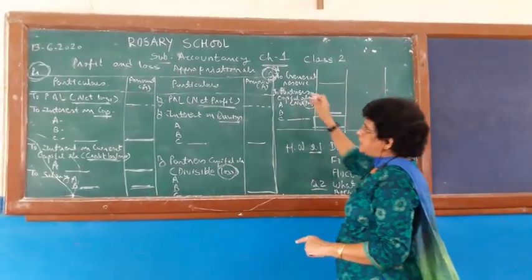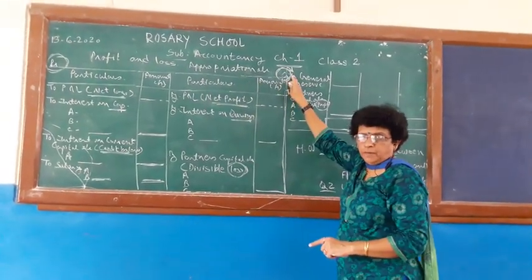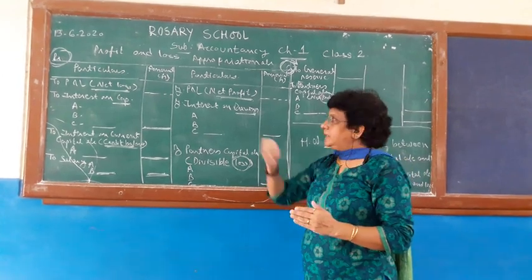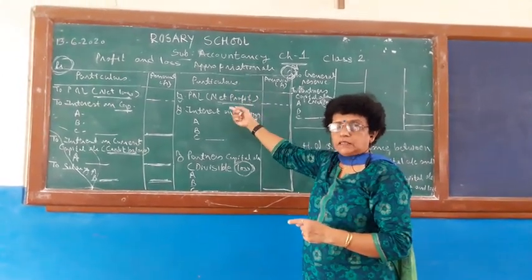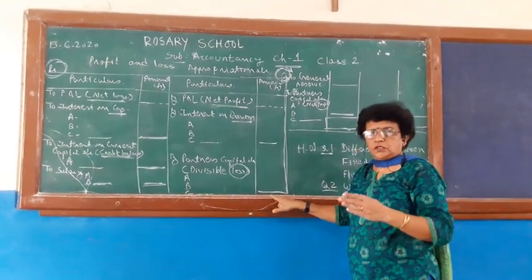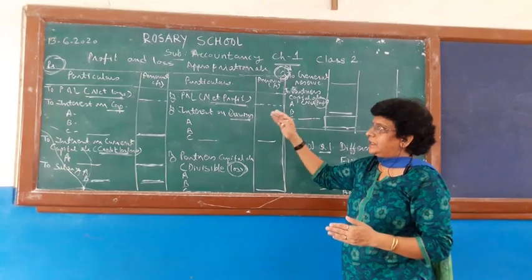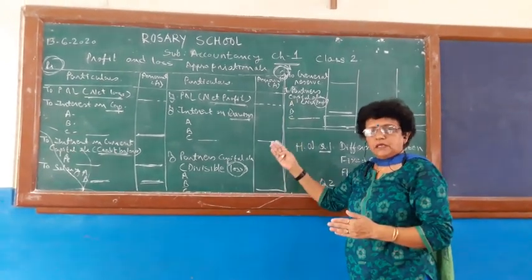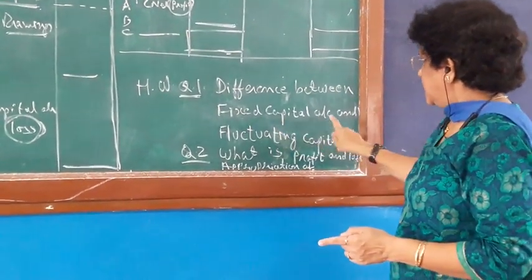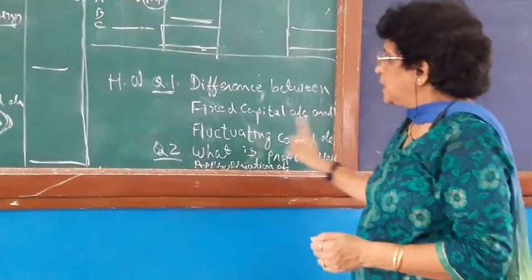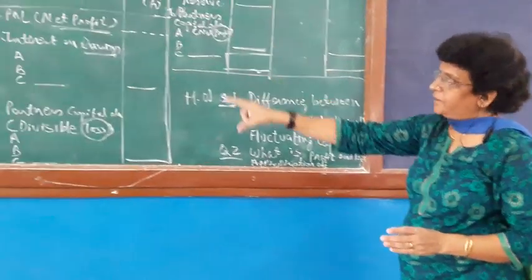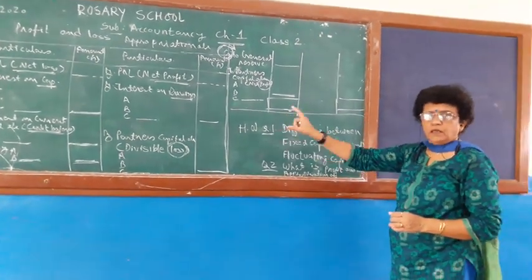In this manner, the entire Profit and Loss Appropriation Account is prepared. With the final accounts of a partnership, we will also prepare the capital account and the appropriation account. Tomorrow we will learn the preparation of the capital account as per the fluctuating method and the fixed capital method. Today's homework: write the difference between fixed capital account and fluctuating capital account, and write a short note on Profit and Loss Appropriation Account along with a specimen format.